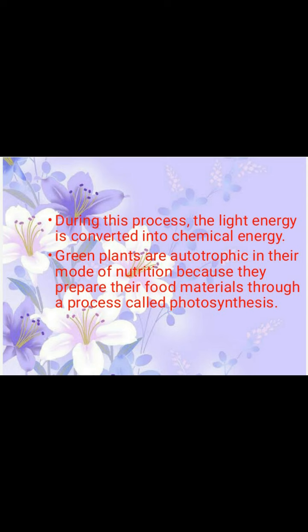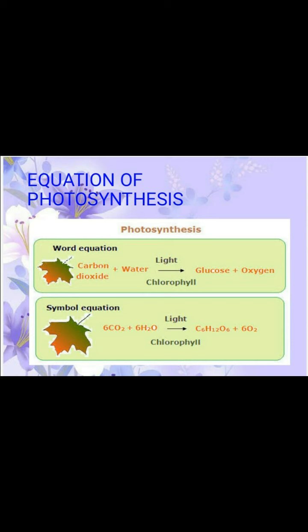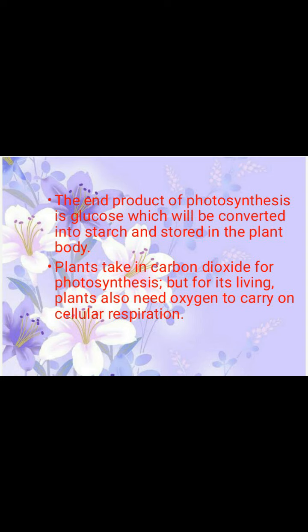Autotrophic means self. The end products of photosynthesis are glucose and oxygen. So this is a simple word equation. The end product is glucose and oxygen. Glucose is then converted into starch and stored in the plant body.